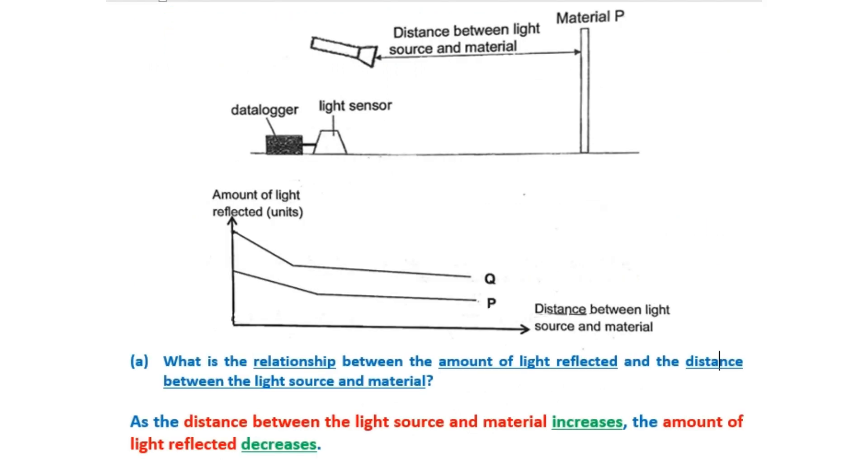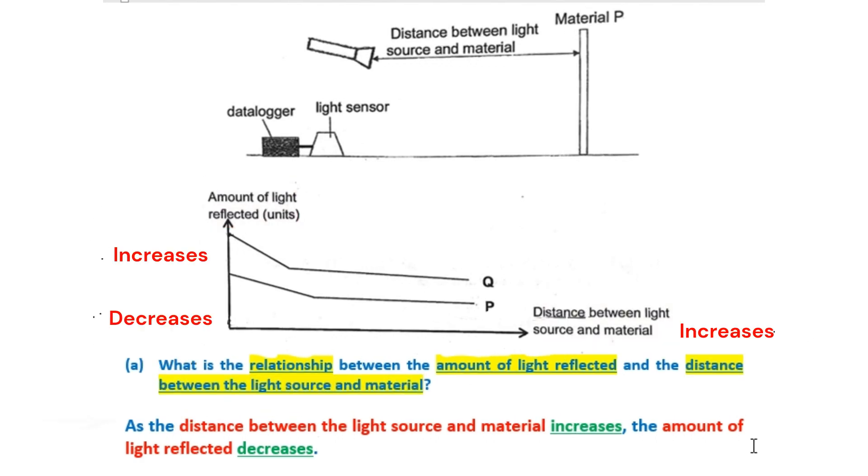What is the relationship between the amount of light reflected and the distance between the light source and material? As the distance between the light source and material increases, the amount of light reflected decreases.